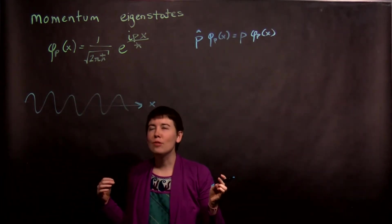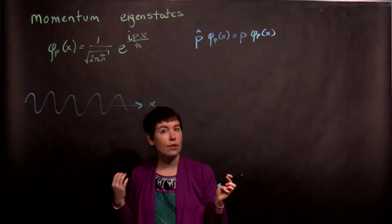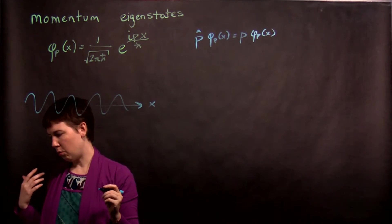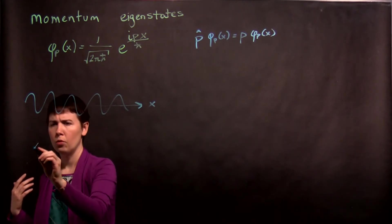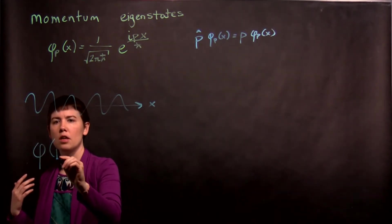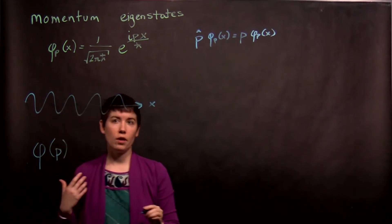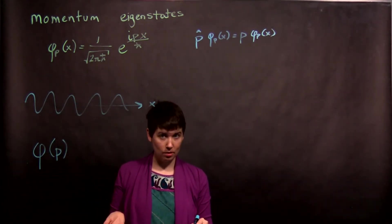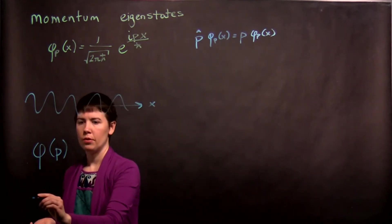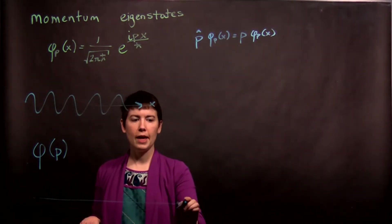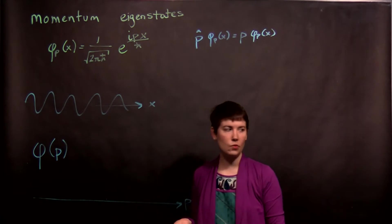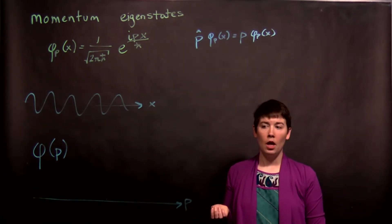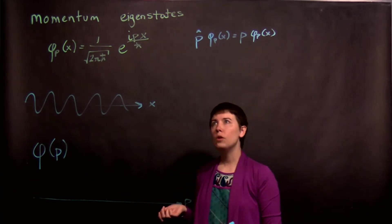But now there's a different way we could write this, and we could instead think about, well what is my wave function expressed in position space? What that means is now my horizontal axis is not going to be position, it's going to be momentum. And so what would that look like?